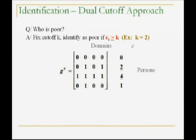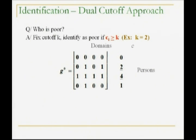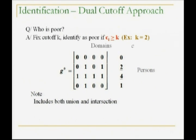So if we took K equals 2, we would have those two people as being poor. Persons 2 and 4 at the right side are above or equal to 2, and we would have person 2 and 3 being poor by this definition. In general, where K goes from small numbers to big numbers, you have the entire range of possibilities, including union, intersection, and so forth.